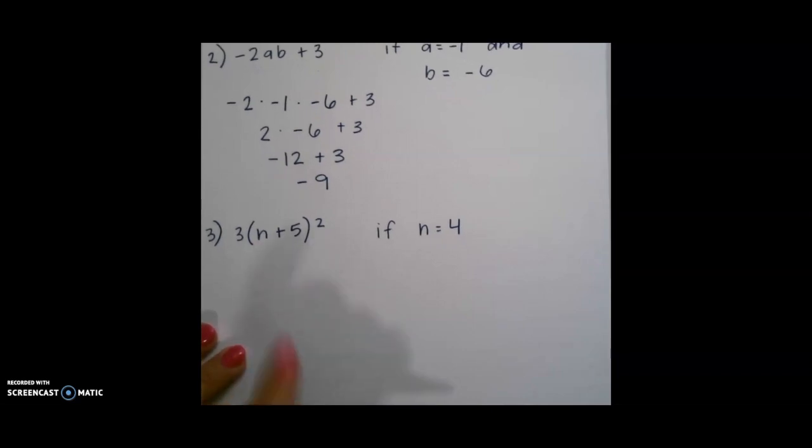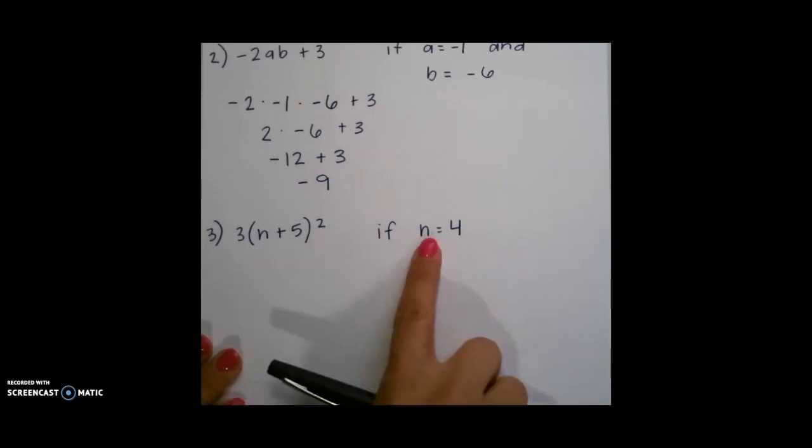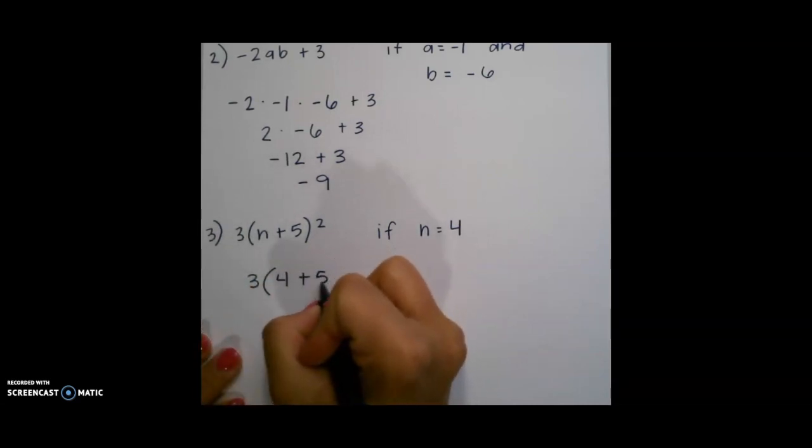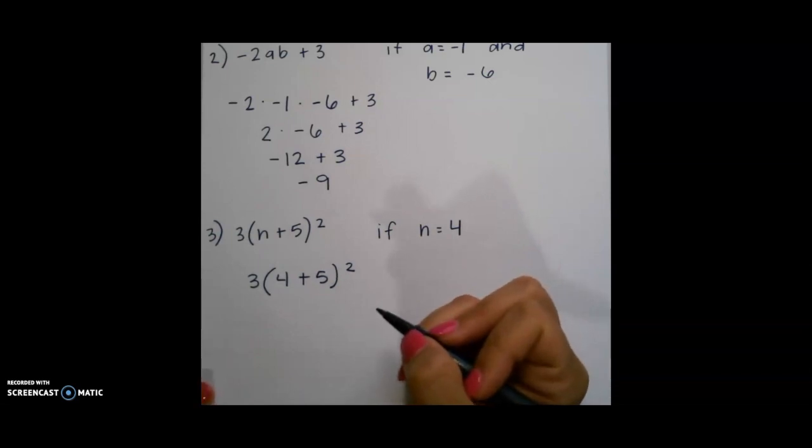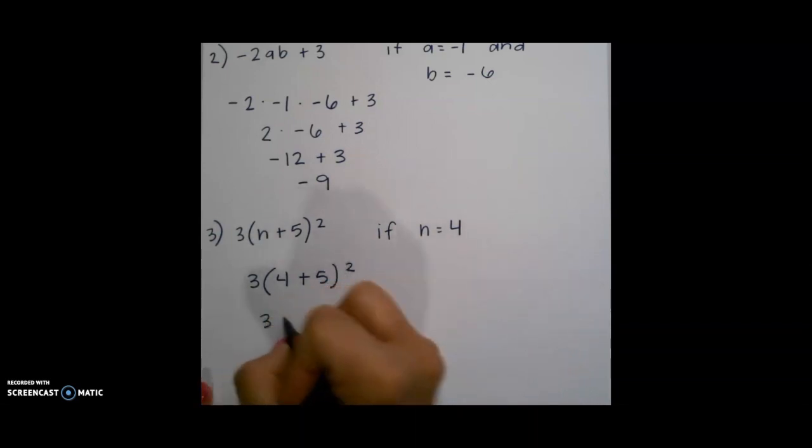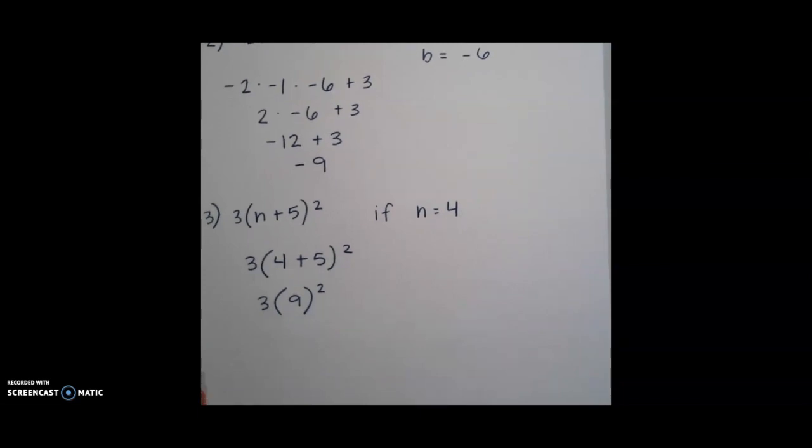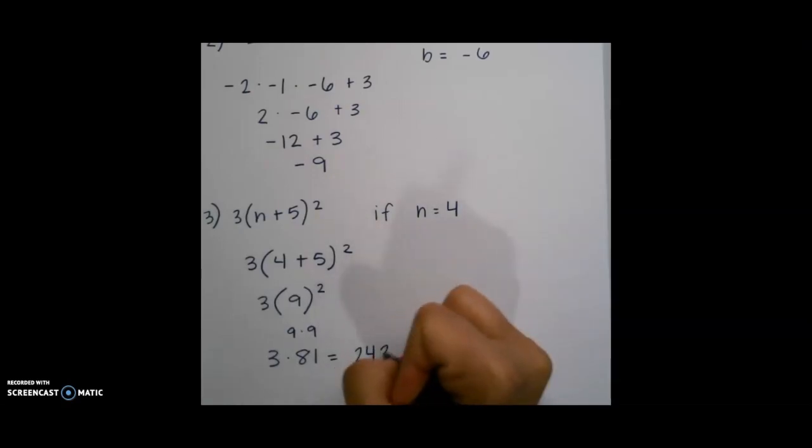For our next example, we see parentheses. We want to first start by substituting 4 in place of n. Remember, with the order of operations, you want to do the parentheses first. 4 plus 5 is 9, and we have our exponent. The next thing we would do according to the order of operations is our exponent, which means I need to do 9 to the second power, which means 9 times 9, which is going to give us 81 times 3 to end our problem. 81 times 3, or 3 times 81, is 243.